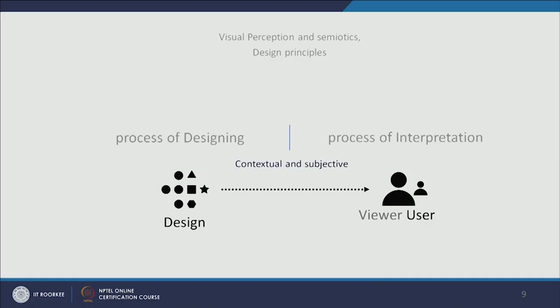There is another aspect: while visual perception and semiotics and design principles are very generic, peoples' perceptions do vary. Each user has a different socio-cultural background, so their perception and understanding are different — they are pre-programmed with visuals they have already seen. We call this the mental model — each user has a particular mental model of each and every visual.